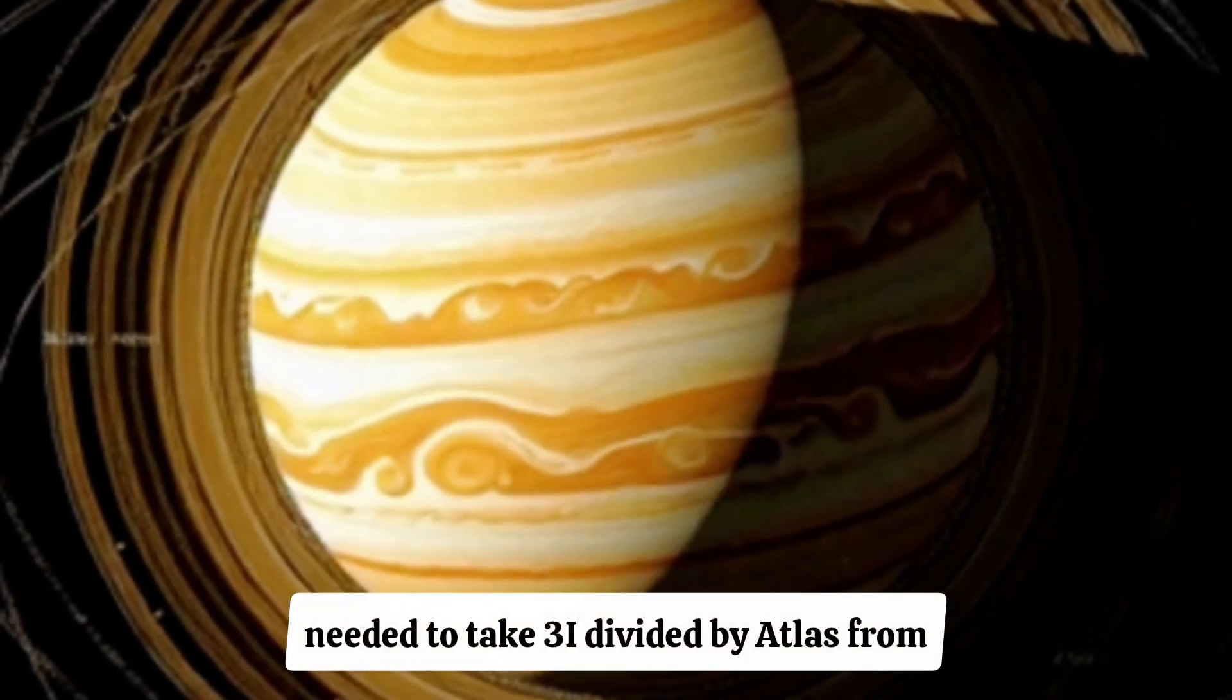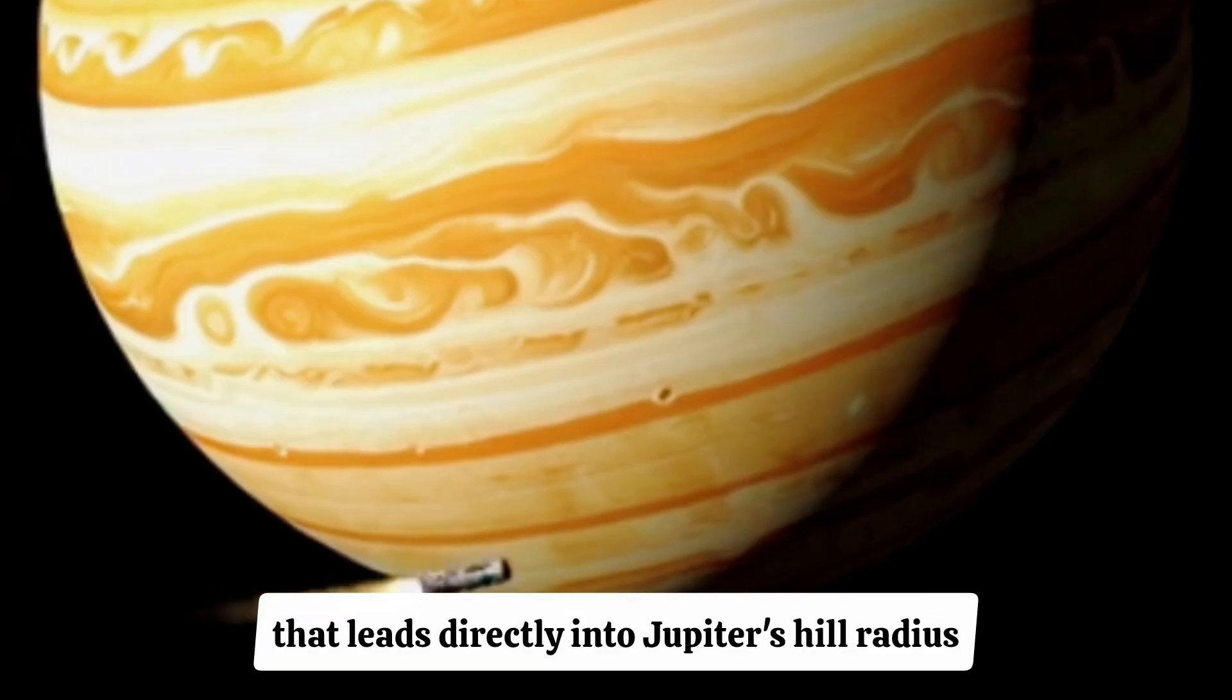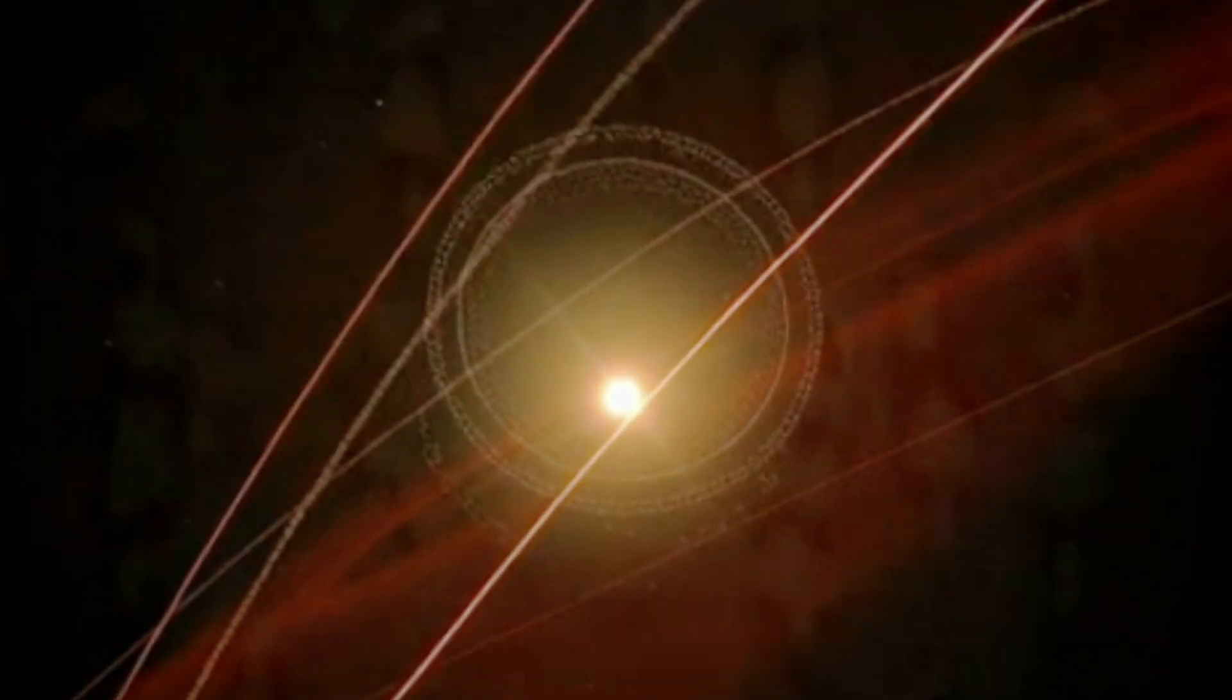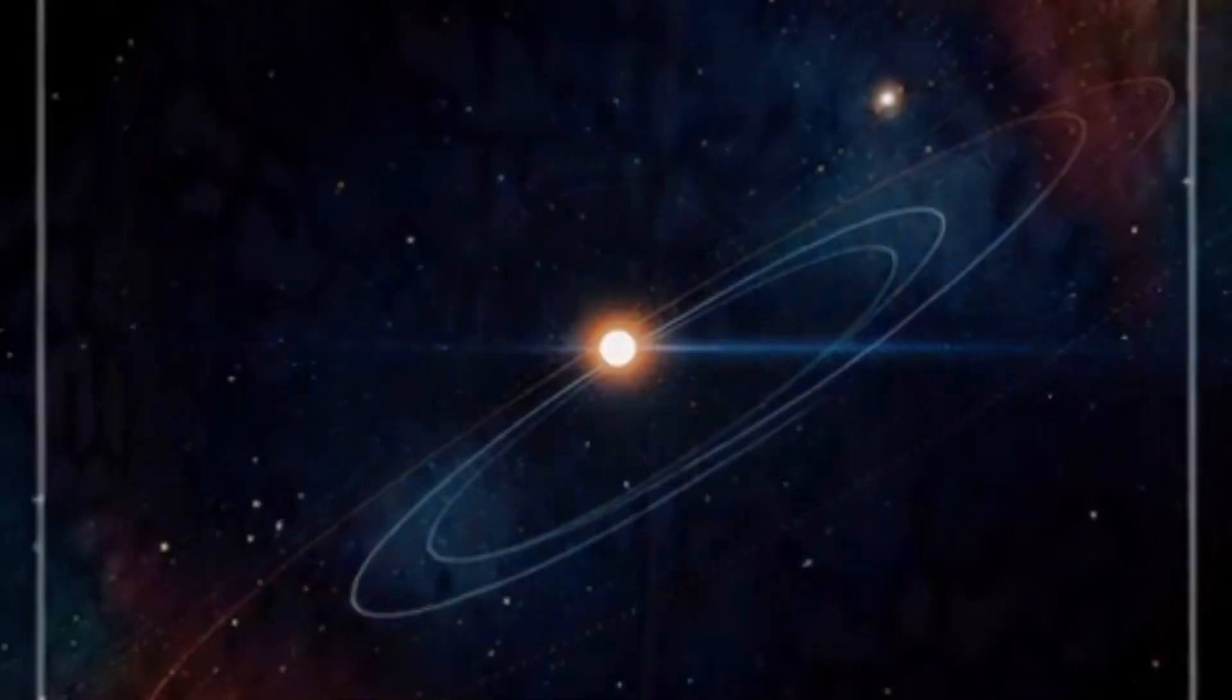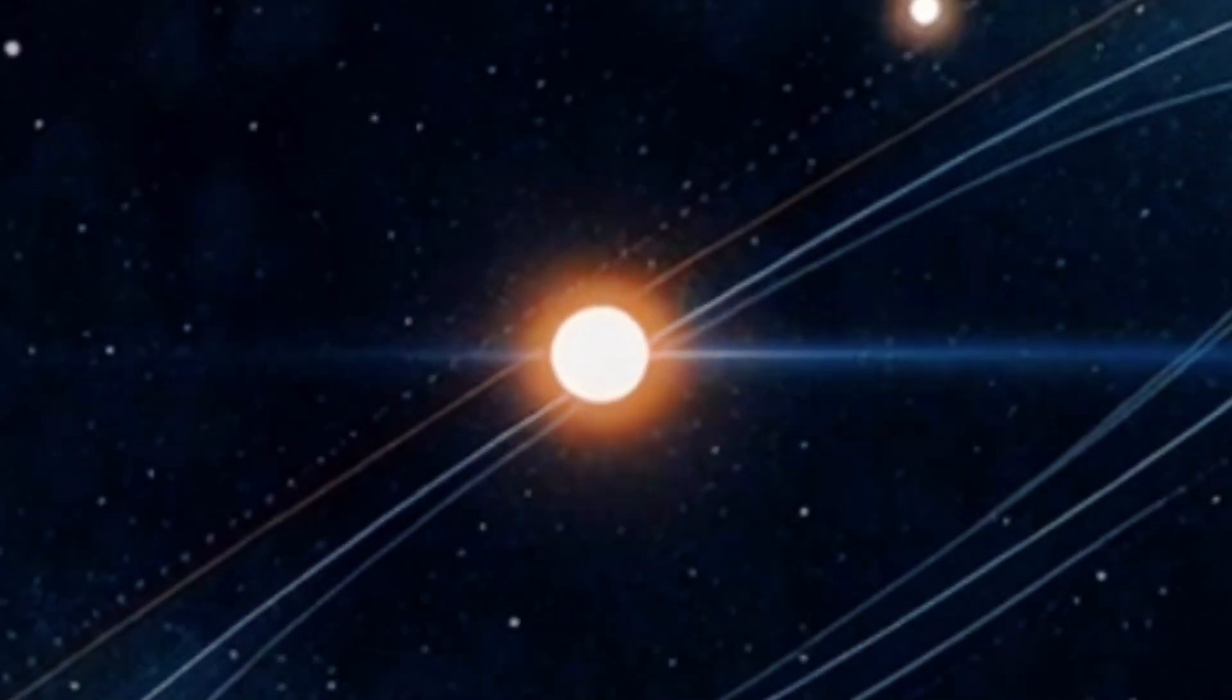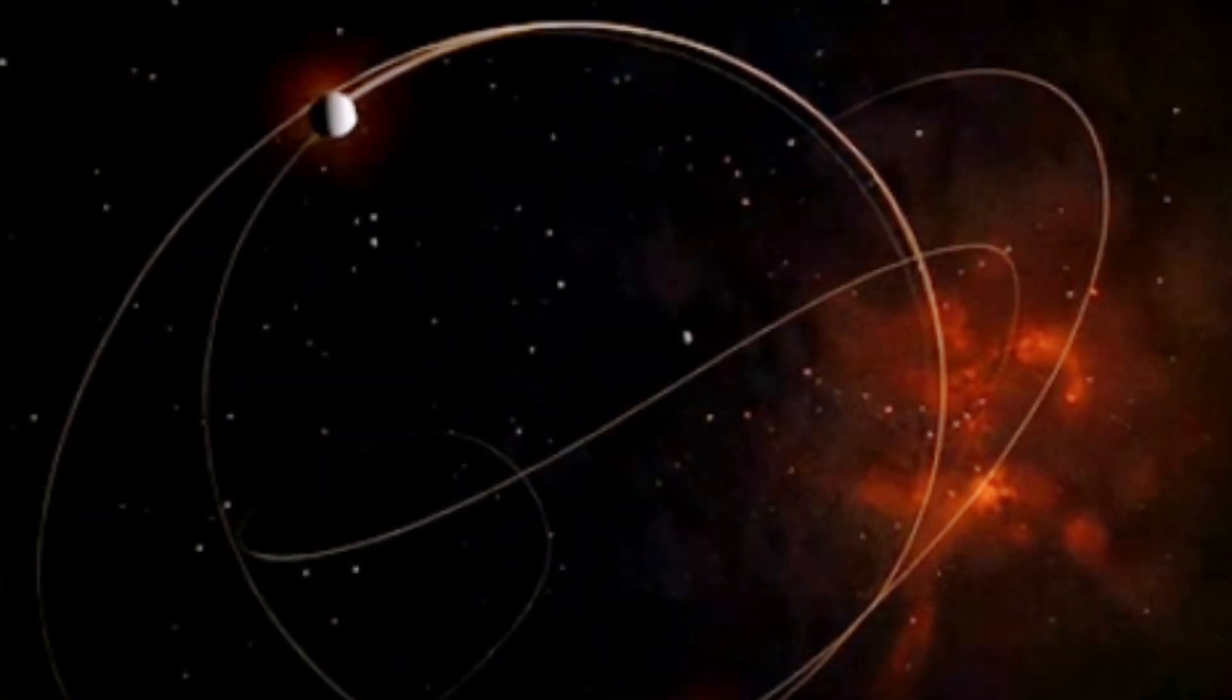That acceleration changed the object's path by around 62,000 miles, which, brace yourself, is the exact adjustment needed to take 3i divided by Atlas from where it was naturally heading to a path that leads directly into Jupiter's hill radius. Not near it. Not close to it. Not more or less in the area. Exactly there. Now pause for a moment and ask yourself this. How does a natural, icy comet flying through space for millions of years perform a trajectory correction equivalent to a precise space maneuver? You think that sounds wild? It gets even crazier.